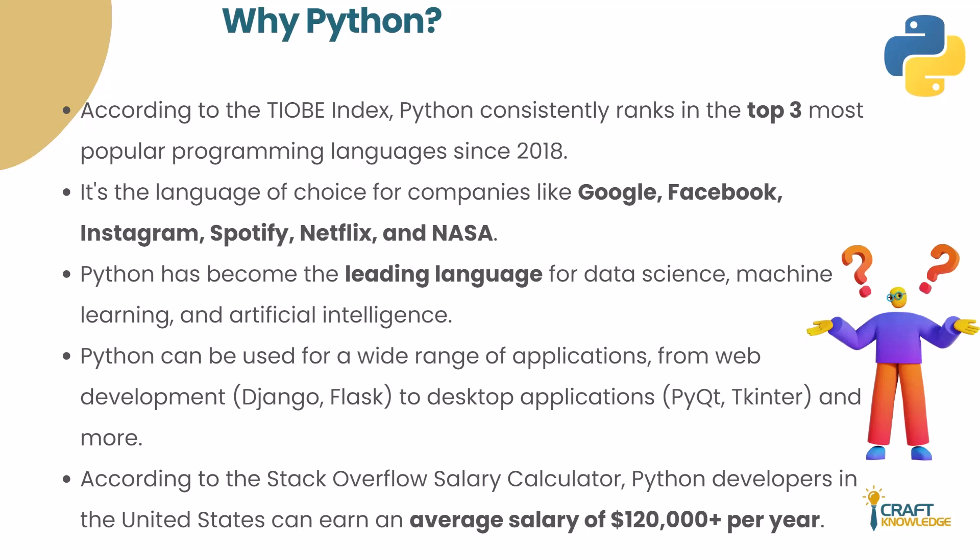We are learning Python to earn something, obviously. According to the Stack Overflow salary calculator — a very credible platform — the average salary of a Python developer in the USA is $120,000 per year. That's the average, and if you excel in the Python career paradigm, you can earn much more than that. I hope you're motivated to learn Python now.